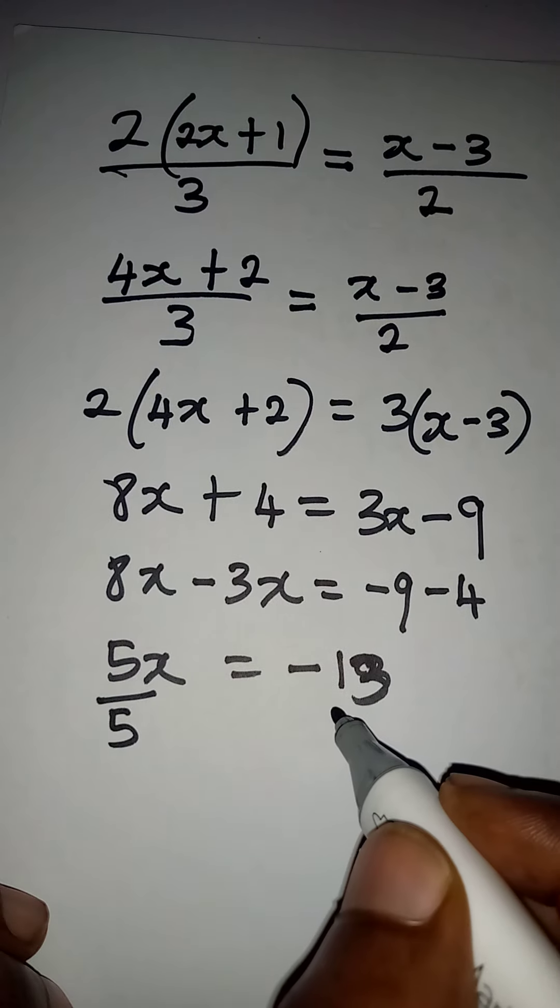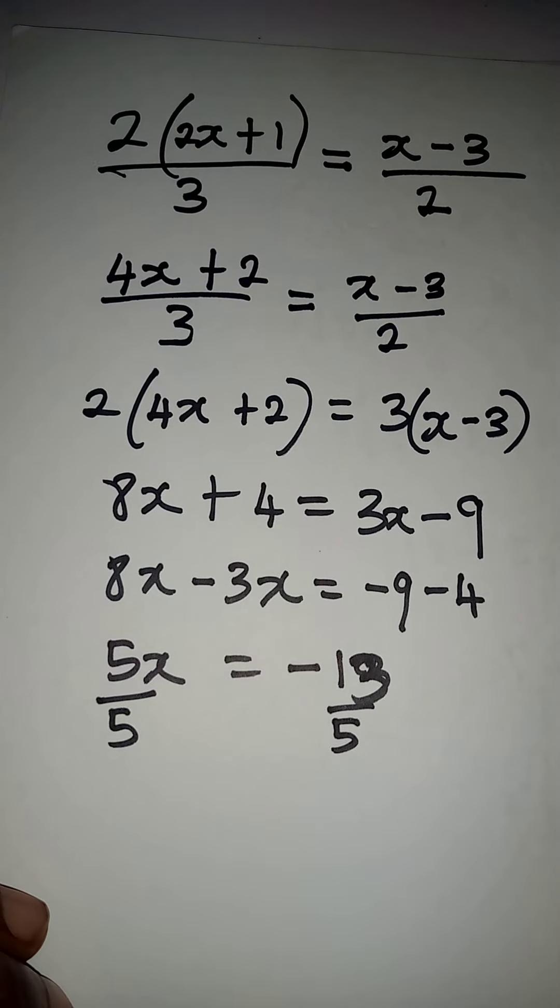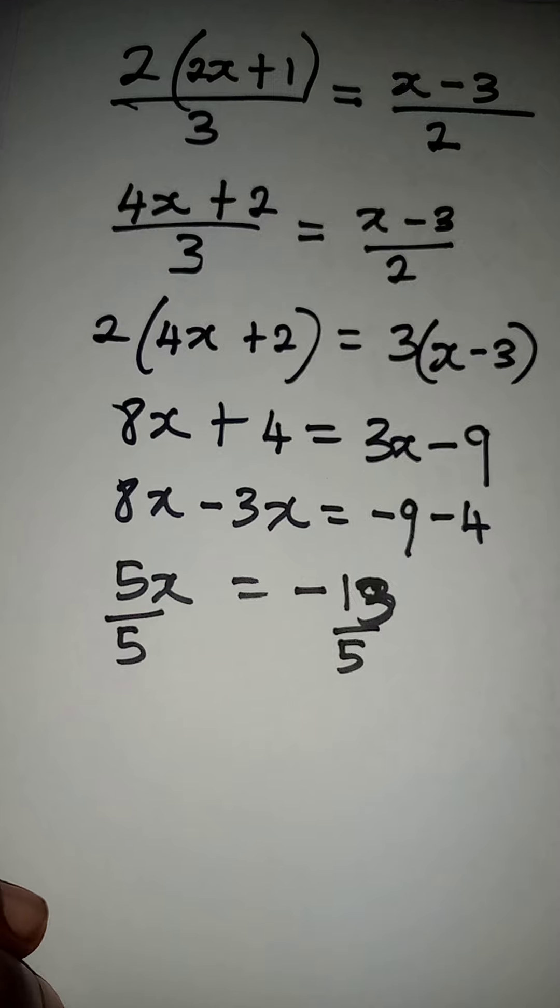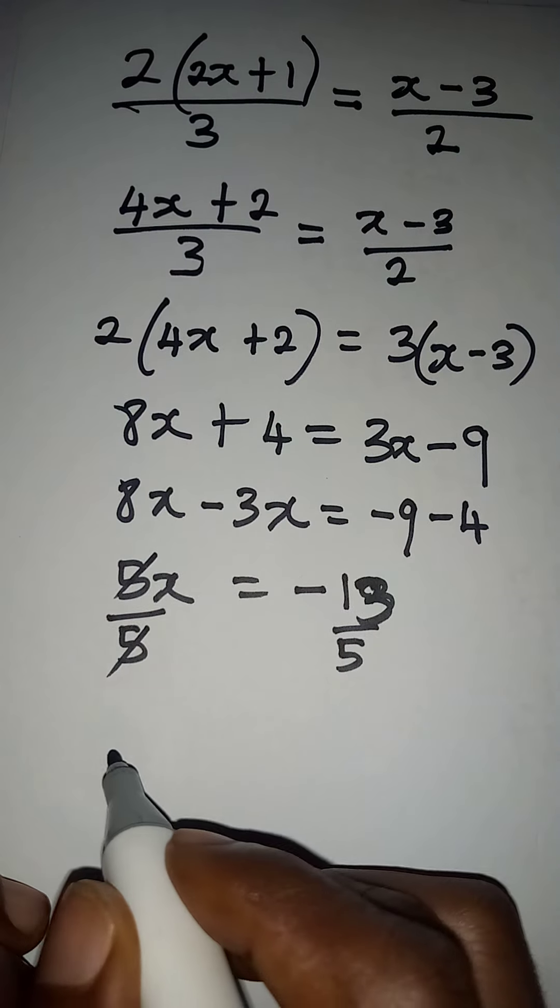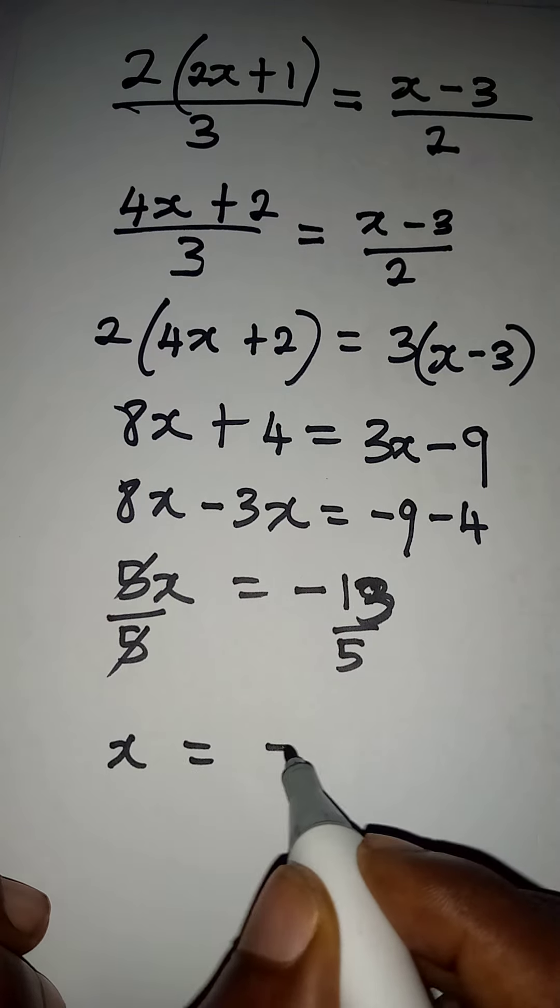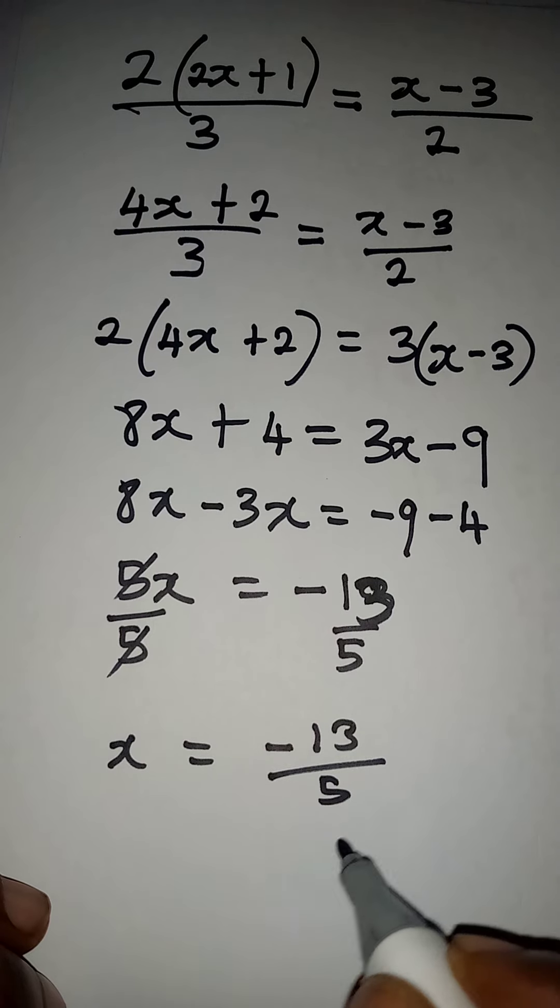5 can cancel 5, and x will be equal to minus 13 divided by 5.